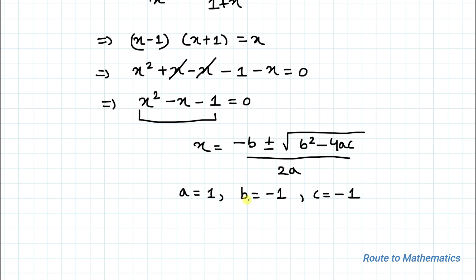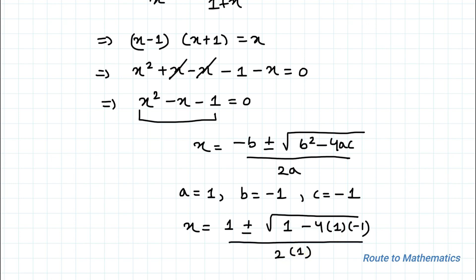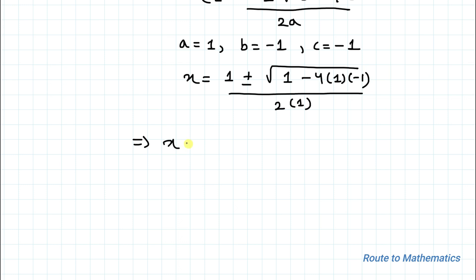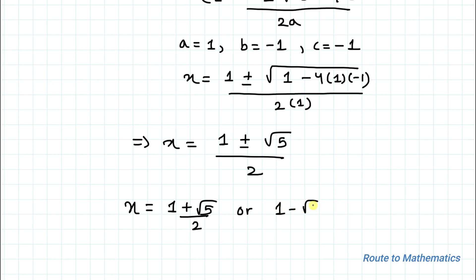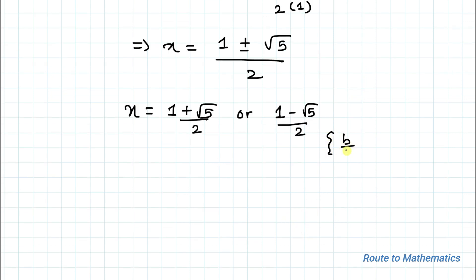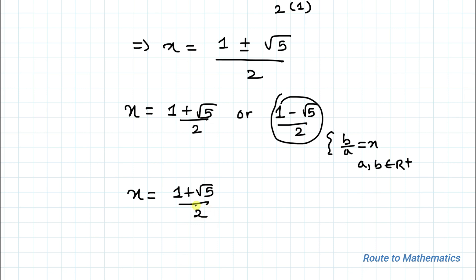Putting the values of a, b, c into the formula we get x = (1 ± √(1 - 4×1×(-1))) / (2×1), which gives x = (1 ± √5) / 2. So x = (1 + √5)/2 or x = (1 - √5)/2. Since b/a = x and a and b are positive real numbers, the negative value is discarded, leaving x = (1 + √5)/2.